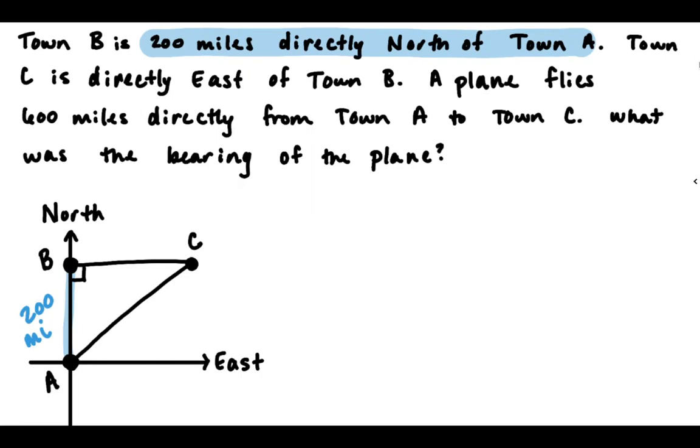Town C is directly east of town B. That helped us draw. A plane flies 600 miles directly from town A to town C. So there's another piece of information. So it's 600 miles from A to C. So A to C is this leg right here. So that we know is 600.